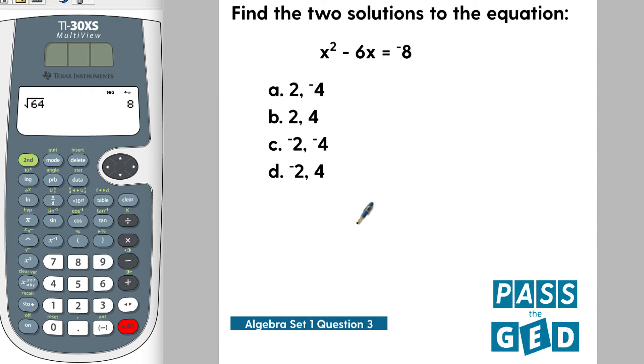Algebra set 1 question 3: find the two solutions to the equation x squared minus 6x equals 8. Let's start by rewriting this. Notice your answer choices are all very similar, so use that to help guide your thinking.